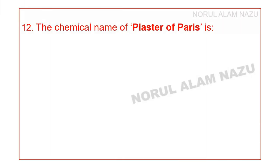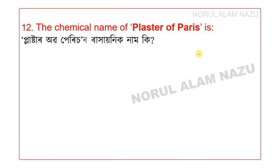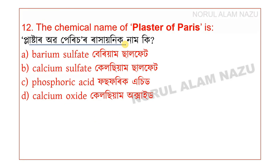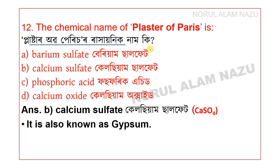Question number 12: The chemical name of plaster of Paris is Calcium Sulfate (CaSO4). It is also known as Gypsum.